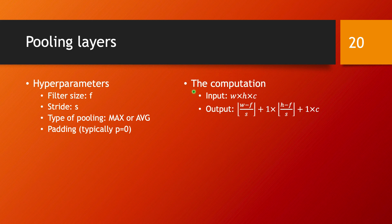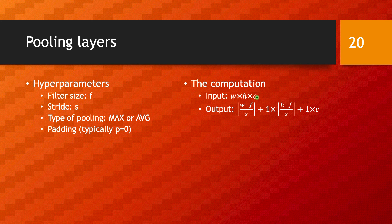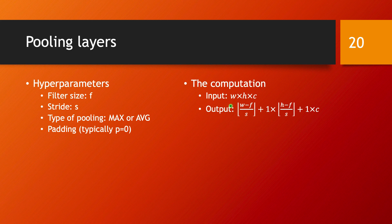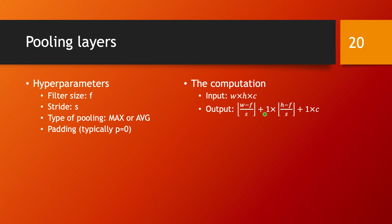The computation that's done in a pooling layer is this one: you have in the input a tensor of size width, height and the number of channels. And in the output, the way you calculate the size is based on the same argument as that that we used in a convolutional layer. So the size of the output is going to be W minus F over S plus one. If you had padding here also, it would be W plus two P minus F over S, just like we had in the convolutional layer.